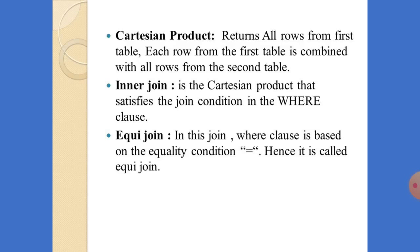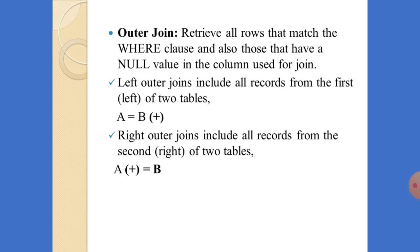Next is the outer join. It retrieves all rows that match the WHERE clause and also those that have a NULL value in the column used for the join. So it retrieves not only matching rows but also rows with NULL values. This outer join is divided into two: left outer join and right outer join. A left outer join includes all records from the left of the two tables, while the right outer join includes all records from the right of the two tables.